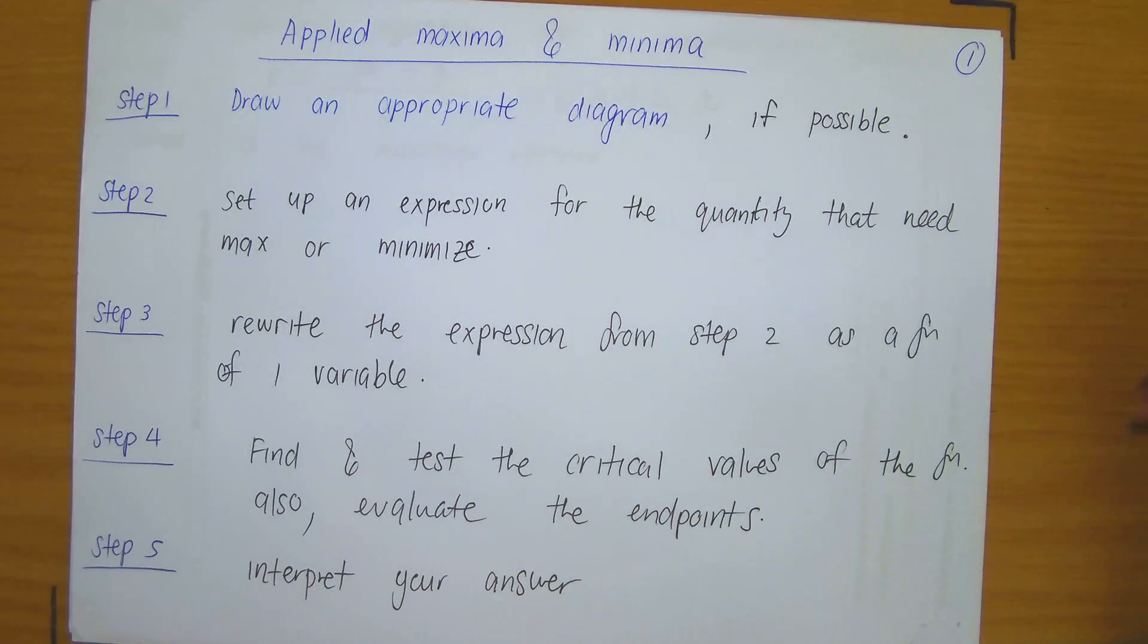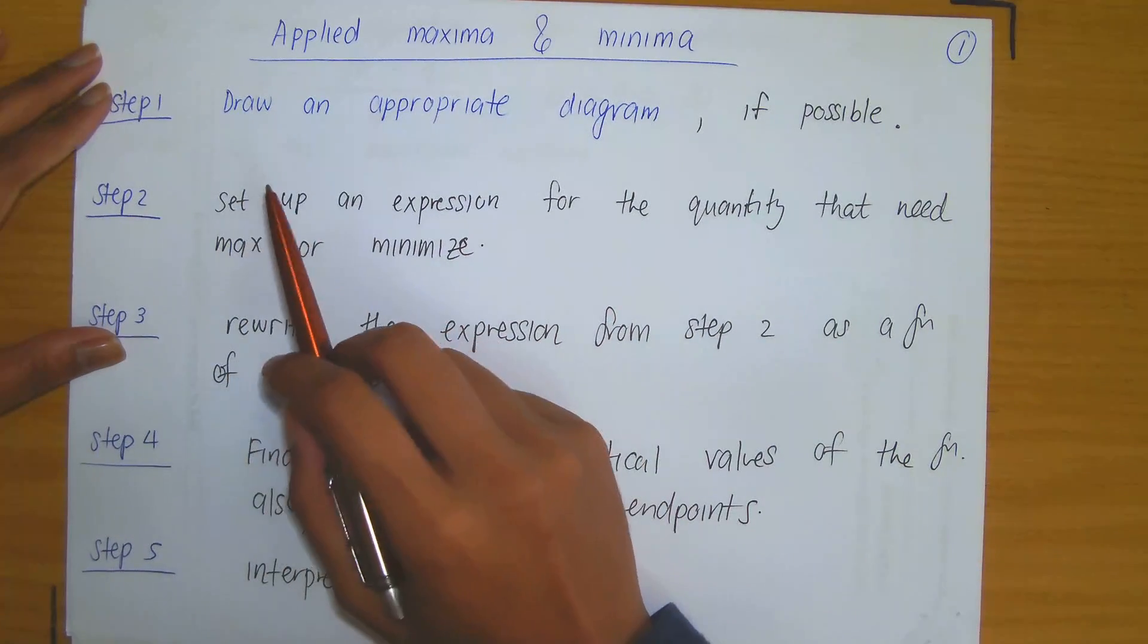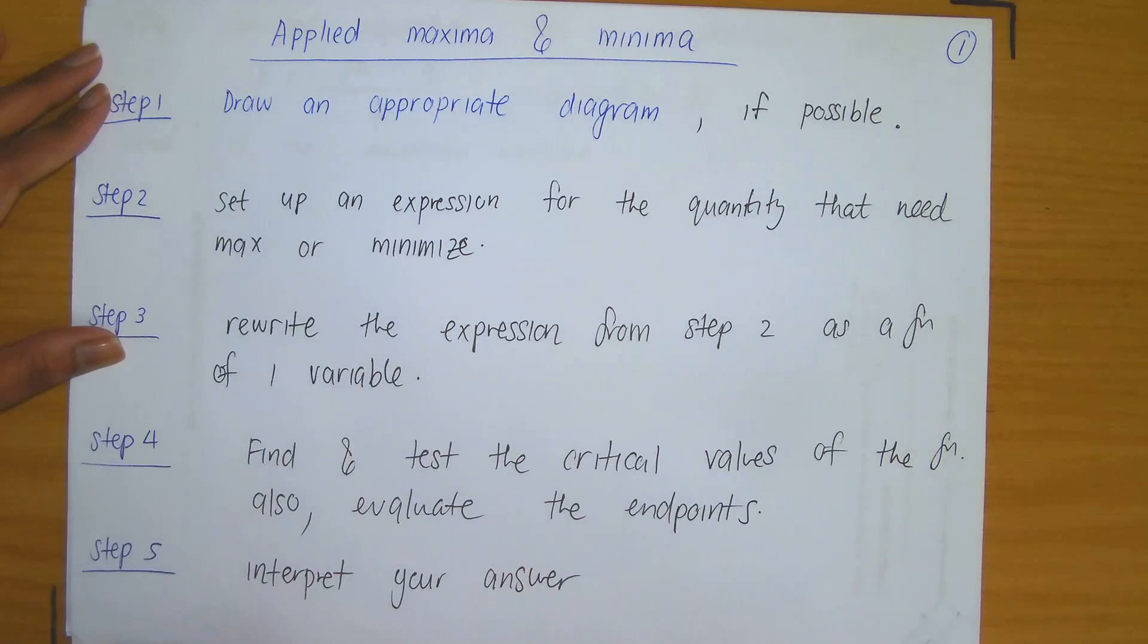So keeping that in mind, I now have a five-step process or a guide for solving maximum or minimum problems that you would be receiving. Step one is to draw an appropriate diagram if possible.